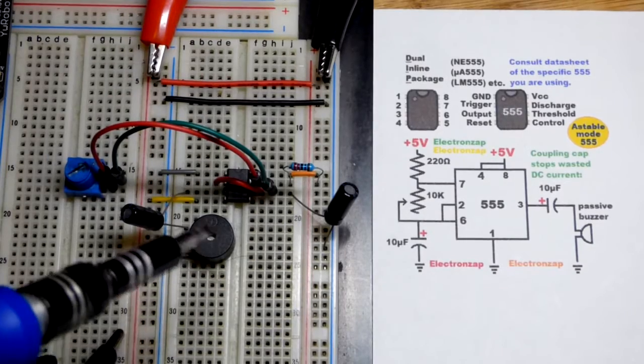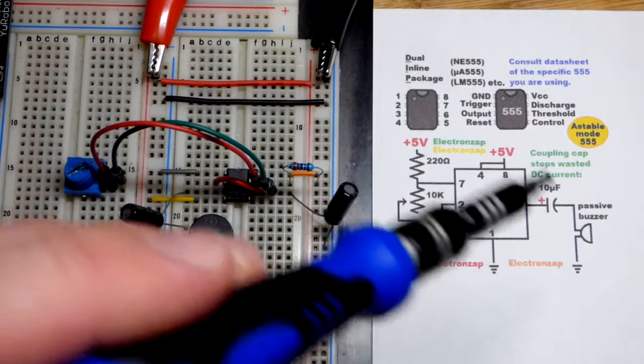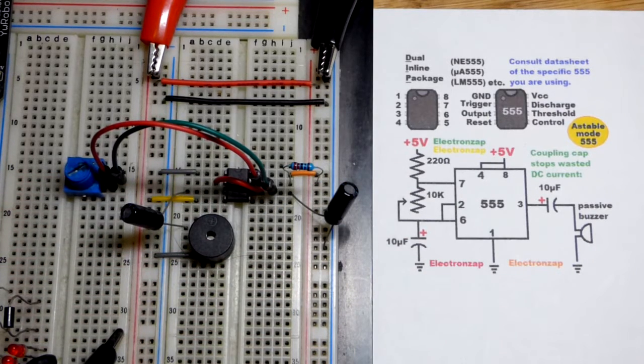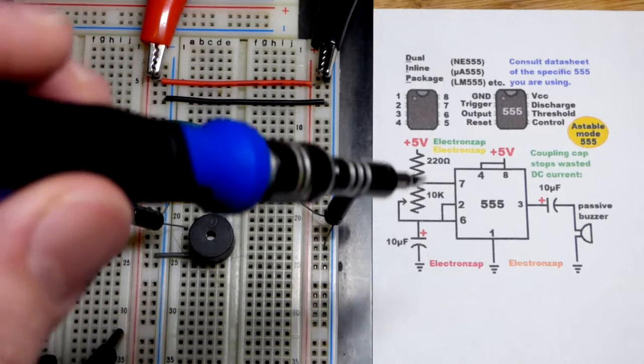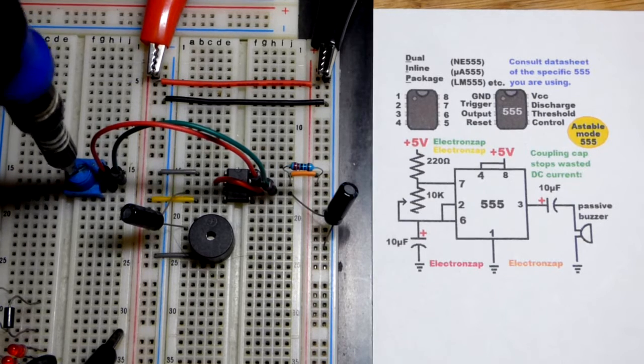So now in this video we're going to look at the passive buzzer. The active buzzer you just apply a voltage to it and it buzzes. The passive buzzer you actually need a changing voltage, usually a quickly changing voltage. We have the frequency pretty low because I have the trim pot set to maximum resistance right there.